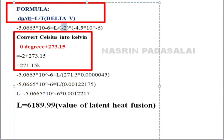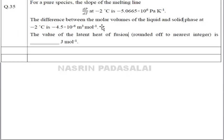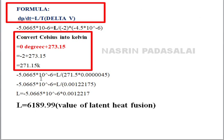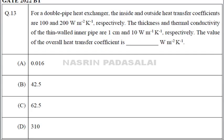Substituting all values into dp/dT = L/(T·ΔV) — replacing −2°C with 271.15 K, since the slope is given in units per K, you must work in kelvin. Rearranging, multiply across and solve for L. The latent heat of fusion comes out to 6189.99, which rounds to 6189.